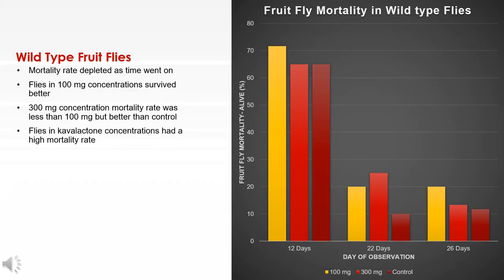For wild type fruit flies, observations were made on the 12th, 22nd, and 26th day. The mortality rate depleted as time went on, as expected. Flies in the 100 mg concentration survived best. The 300 mg concentration had a lower mortality rate than 100 mg but better than the control — which was unexpected. Flies in kava lactone concentrations did have a higher mortality rate compared to the control, as expected given their higher dopamine concentrations.